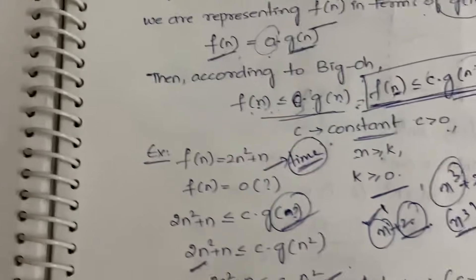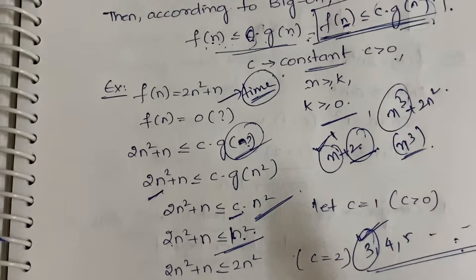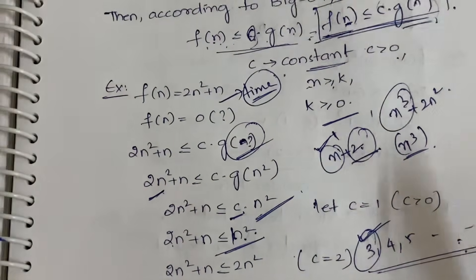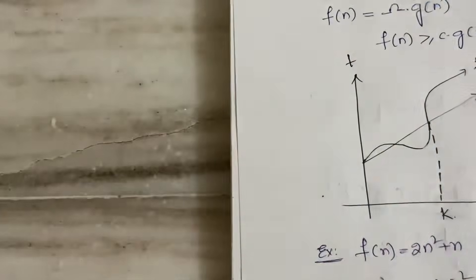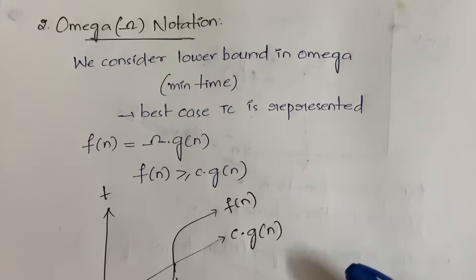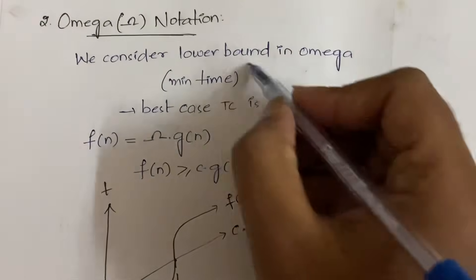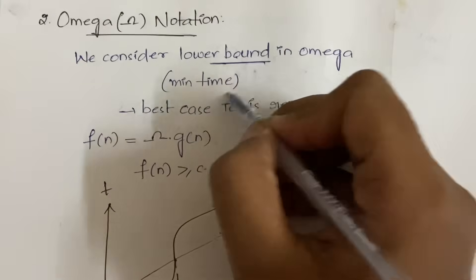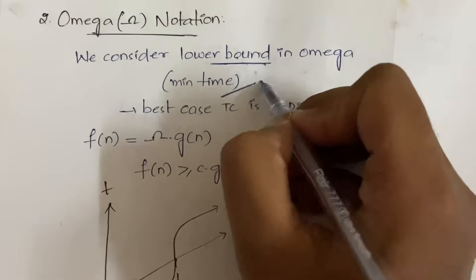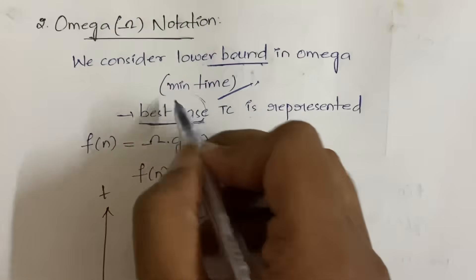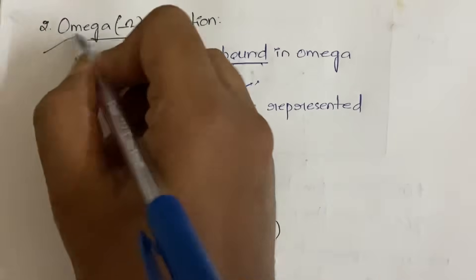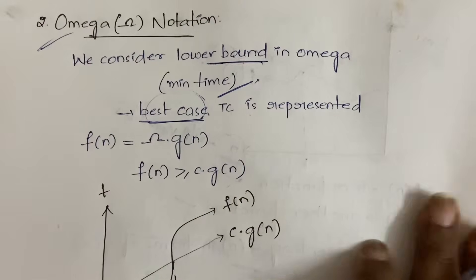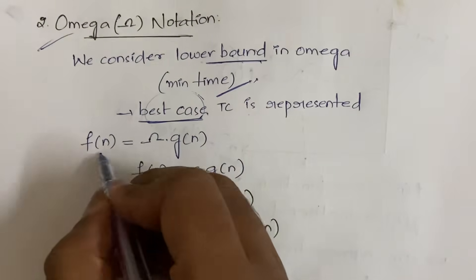This is how you represent Big O notation. Now let us look at Omega notation. In Omega notation, we consider the lower bound — which is the minimum time — that is, we go for the best case time complexity. Here, f(n) = Ω(g(n)) and f(n) ≥ c · g(n).